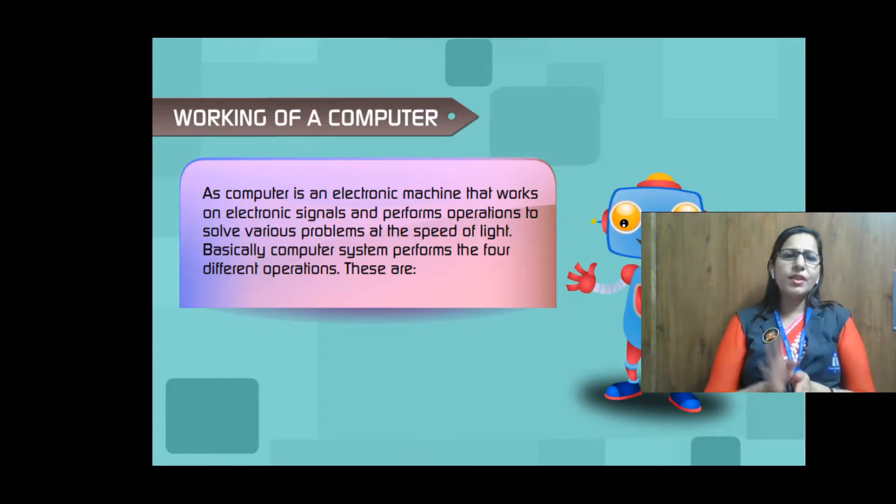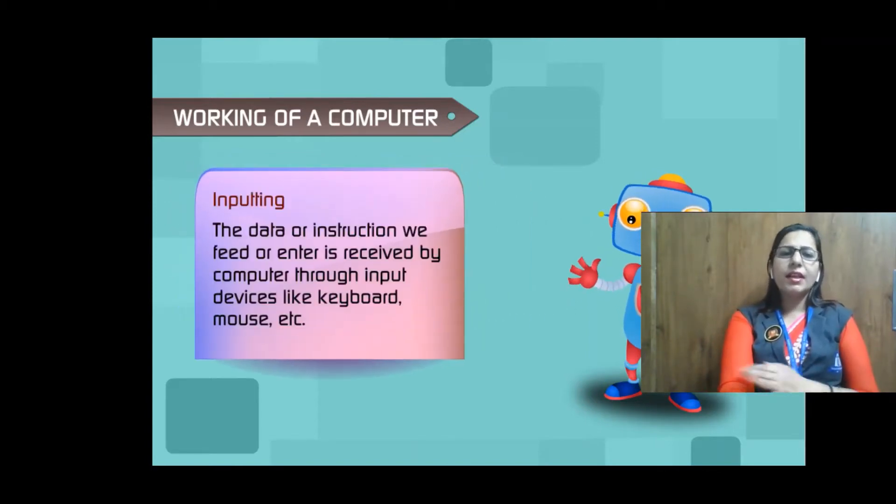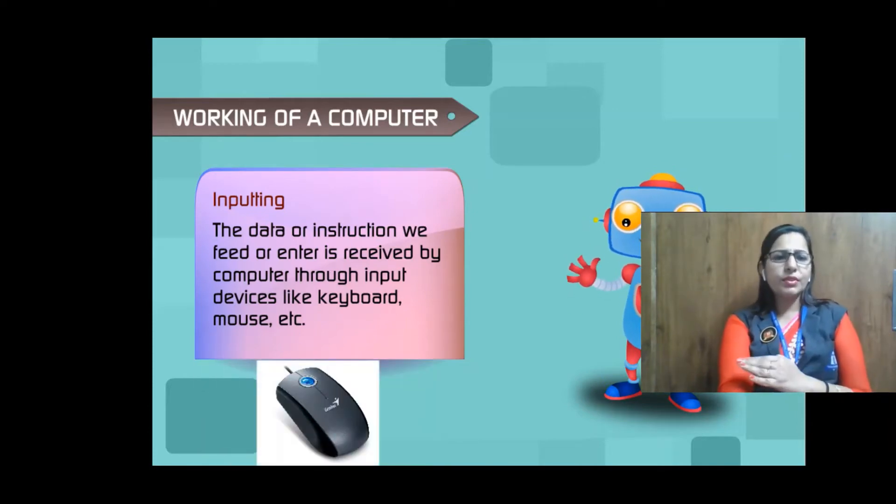Basically, computer system performs four different operations. First is inputting. The data or instructions we feed or enter is received by computer through input devices like keyboard, mouse, etc.